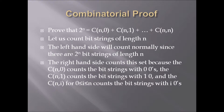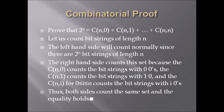The right-hand side counts the same set: C(n,0) counts bit strings with zero 0s, C(n,1) counts bit strings with one 0, and C(n,i) for i between 0 and n counts bit strings with exactly i zeros. When you sum them all together, you get every possible bit string. Thus both sides count the same set and the equality holds.